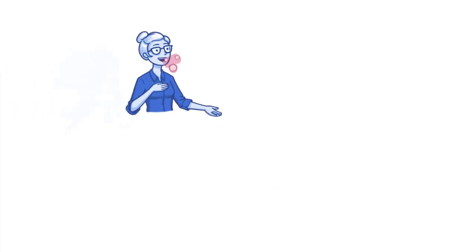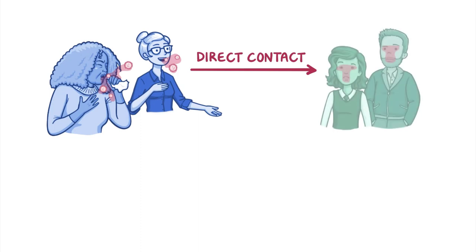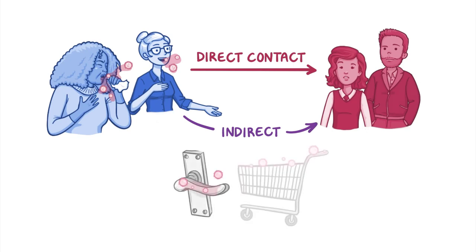A main way they are transmitted person to person is through respiratory droplets, which contain the pathogen and come in direct contact with the eyes, nose, or mouth of another person who comes in close contact, or indirectly make their way there by first contaminating shared surfaces.